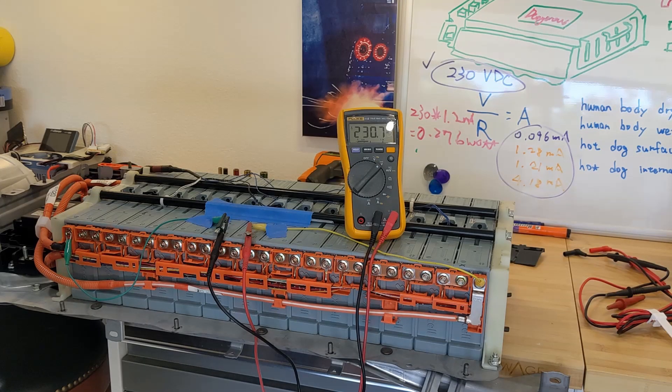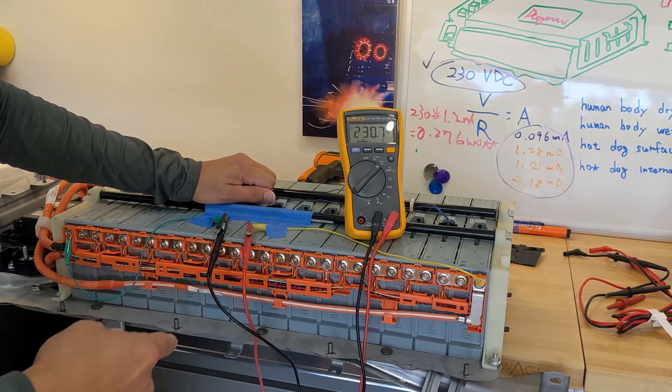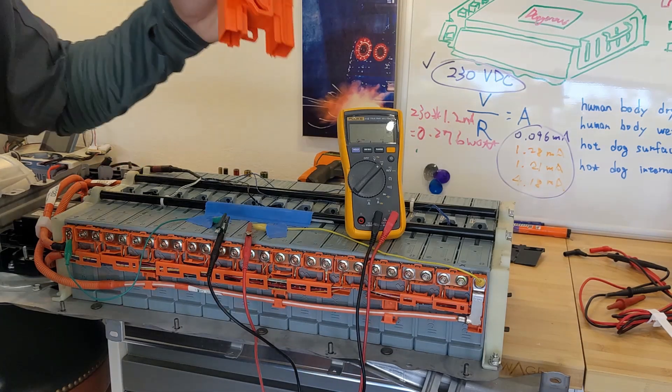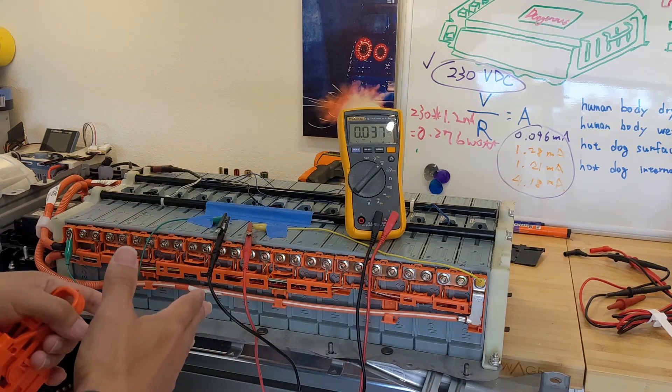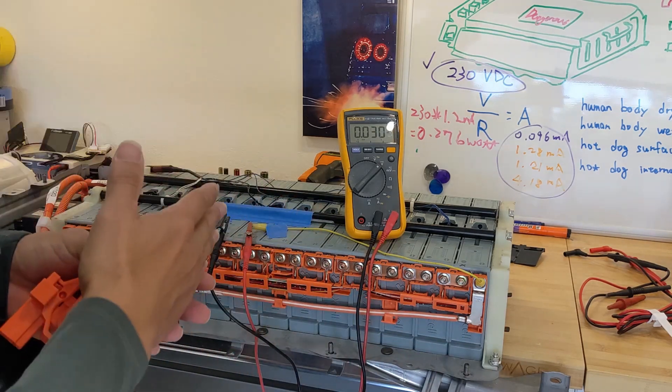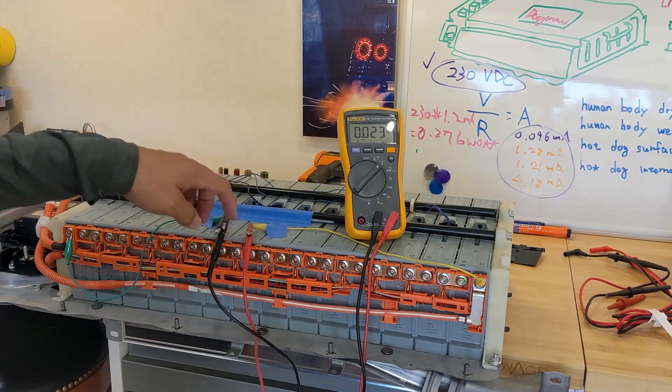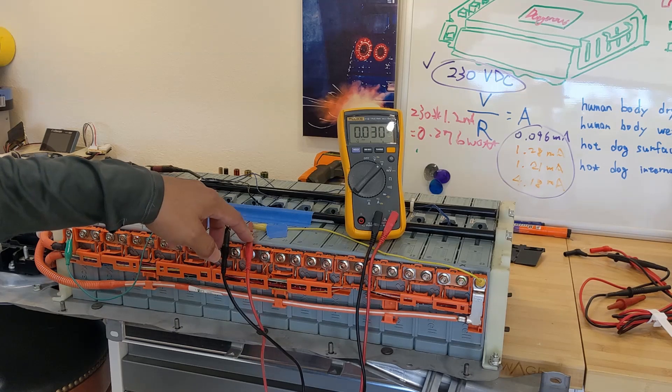Well, what we learned today is that be careful when you work on the hybrid battery. That means always unplug the service plug. It's not going to separate the voltage in half. Actually, it's going to cut the current so there's nothing that can pass through your body. As you can see, zero volts and I can touch it without any problem right now. Zero volts, nothing.